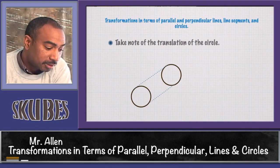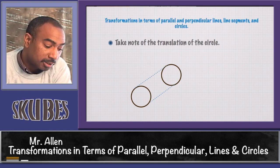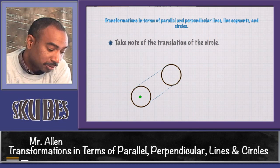Take note of the translation of a circle. Again, that's moving the image from one location to the next, and it doesn't change the circle. It just moves it from one spot to the next.